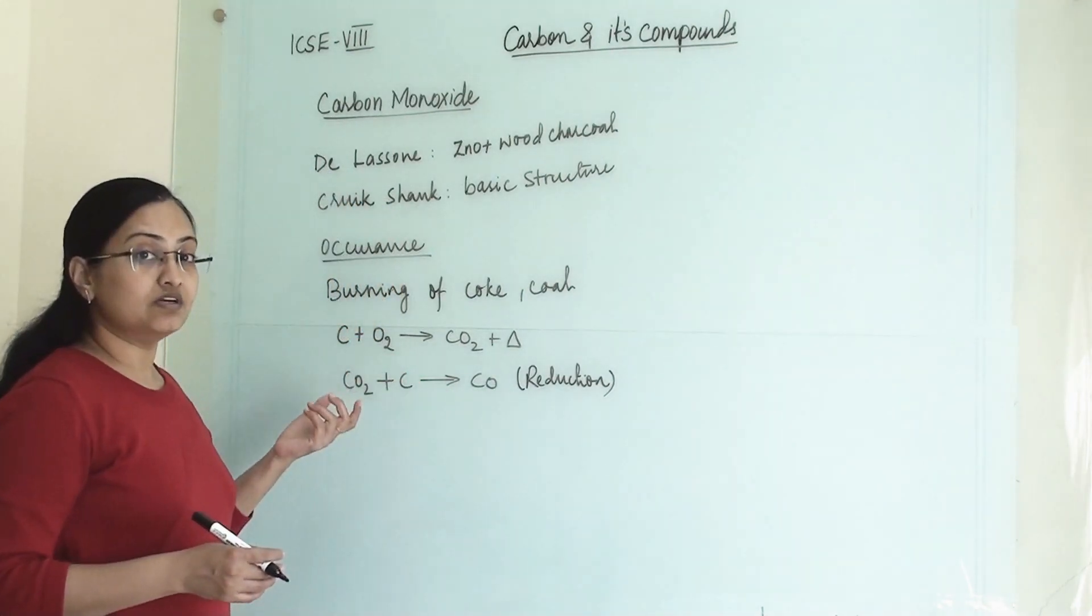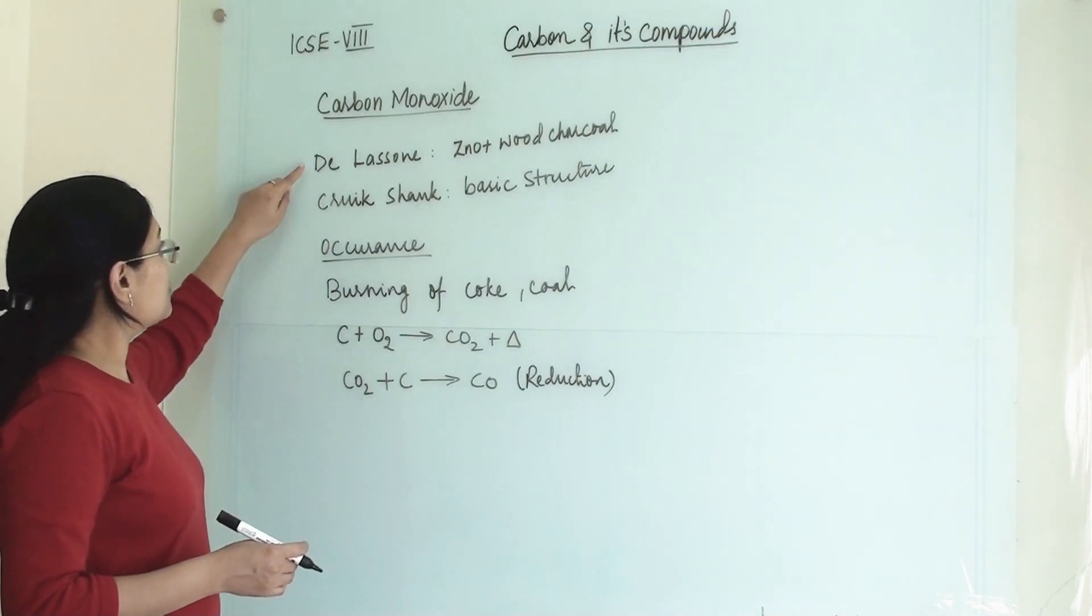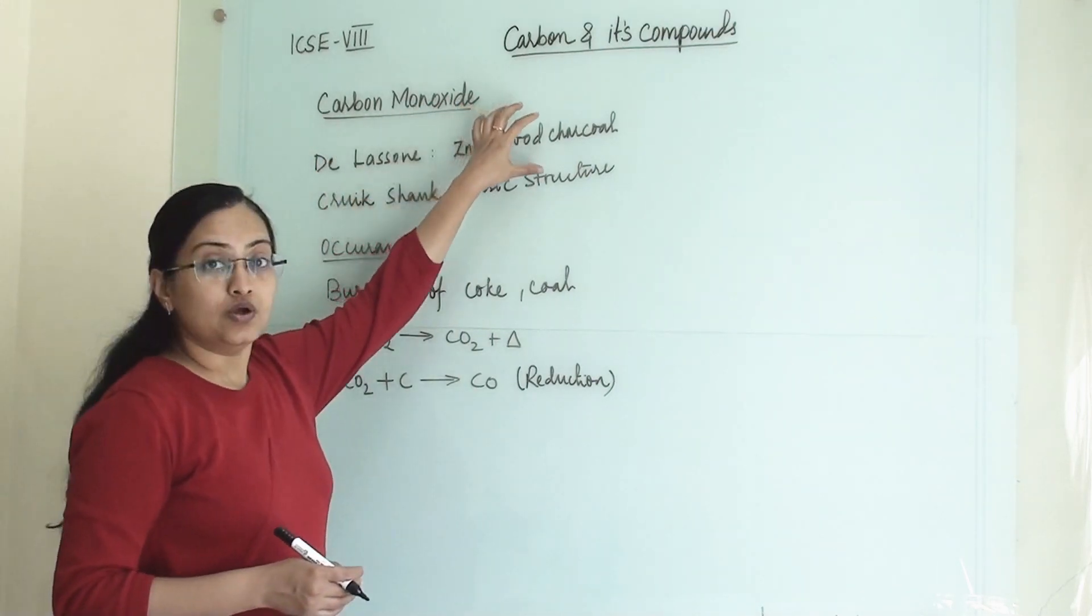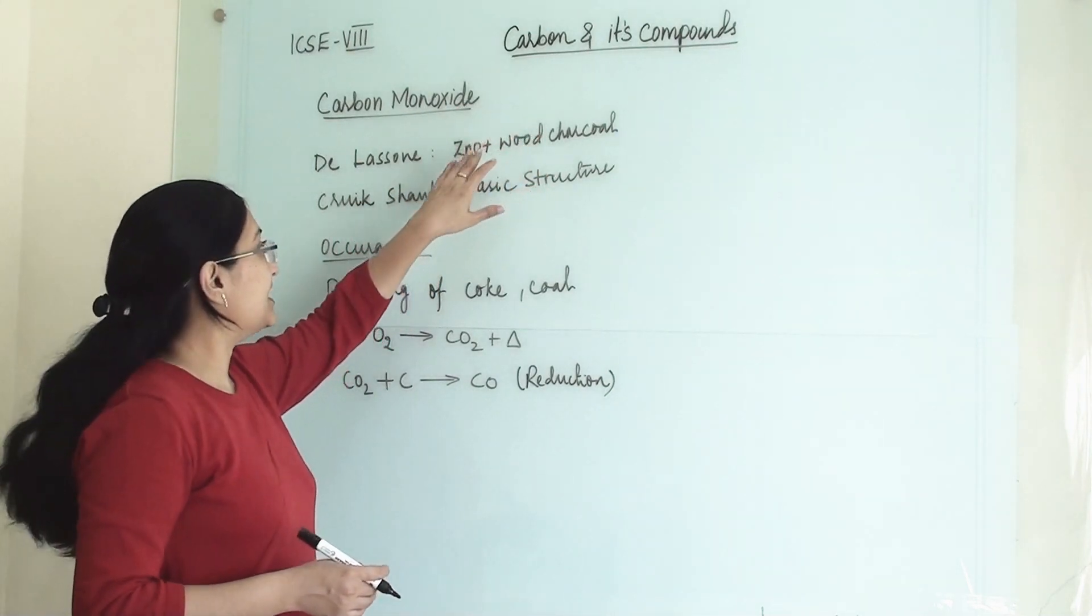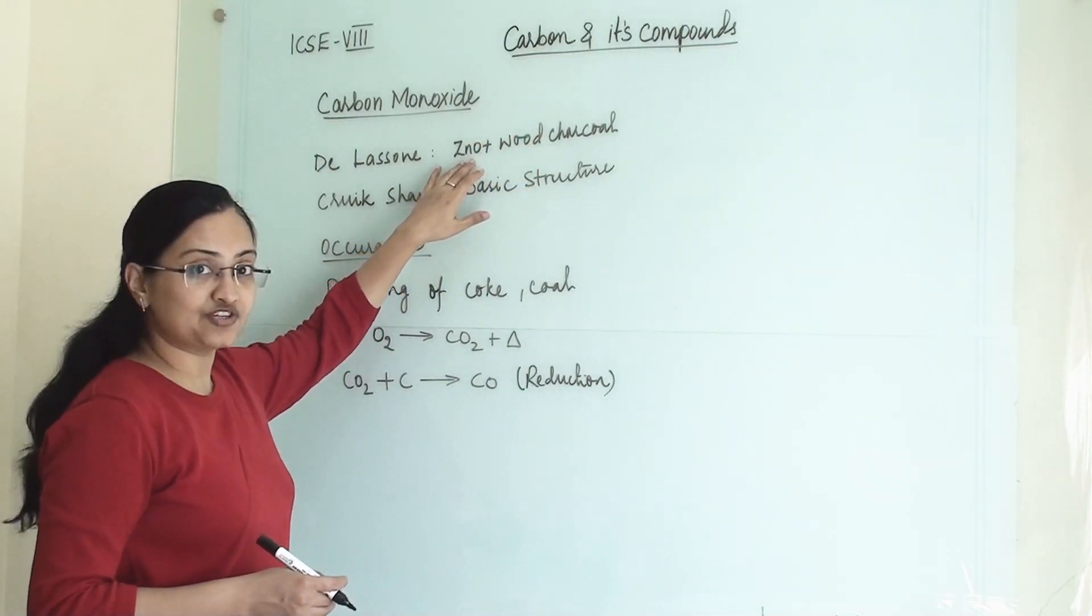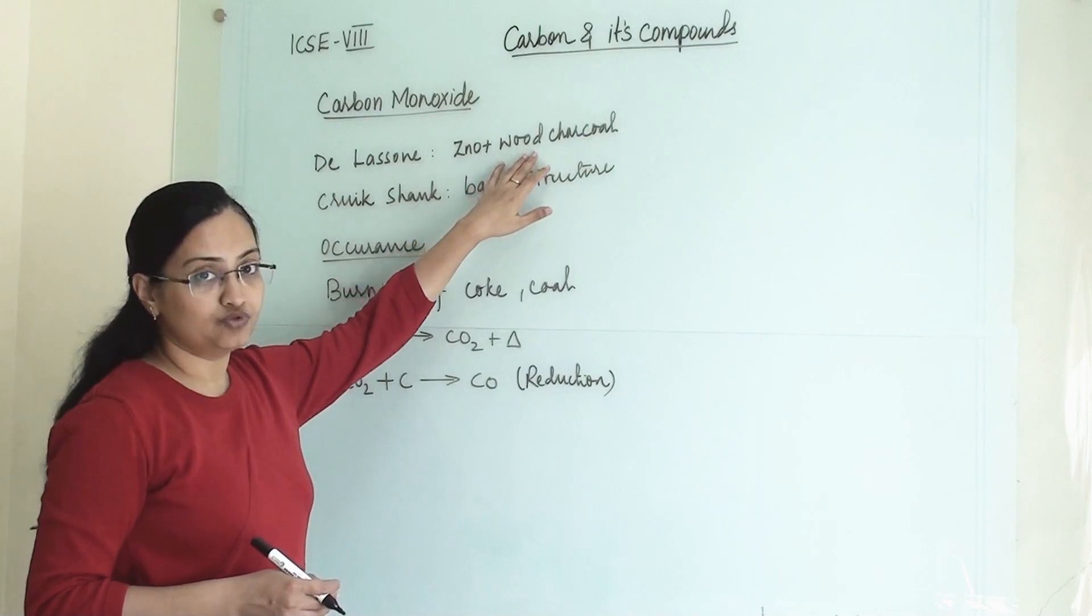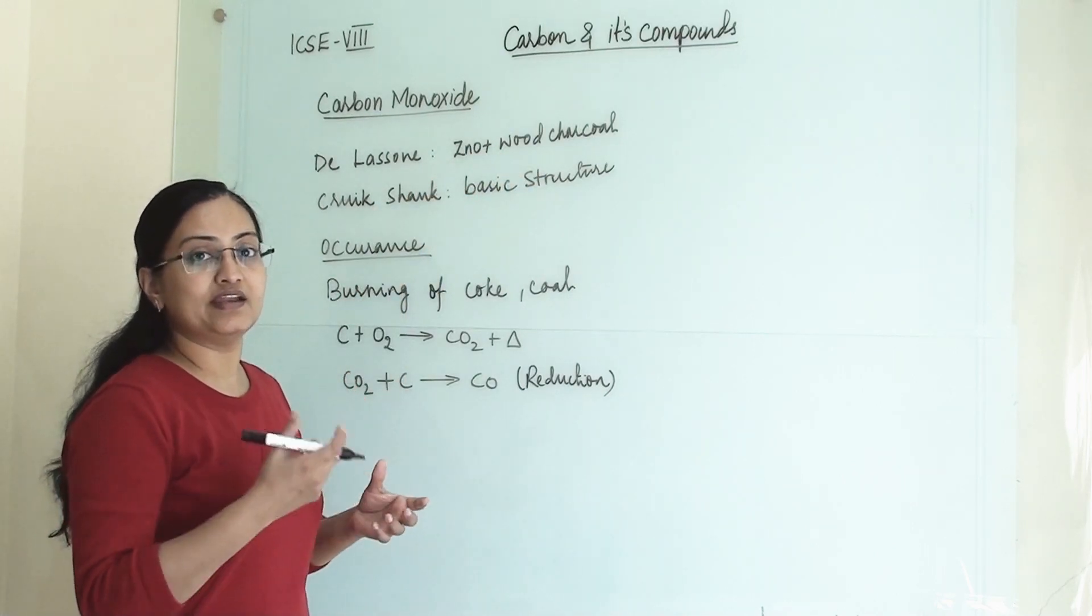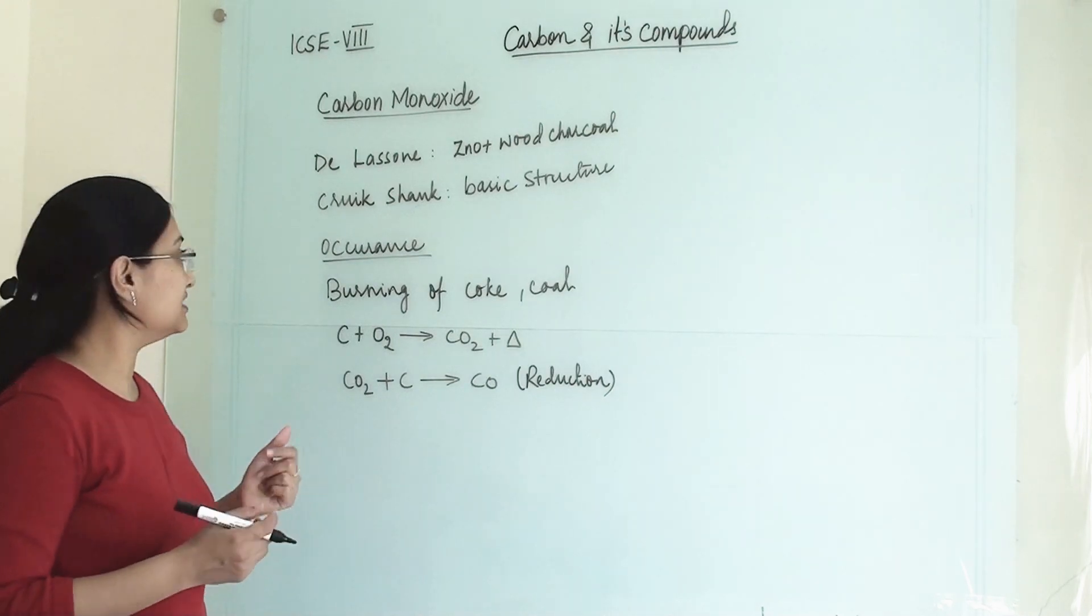So first, who discovered carbon monoxide? De Lassone was the scientist who produced carbon monoxide with the help of reaction between zinc oxide and wood charcoal. So he burnt zinc oxide and wood charcoal and he produced carbon monoxide in the laboratory.